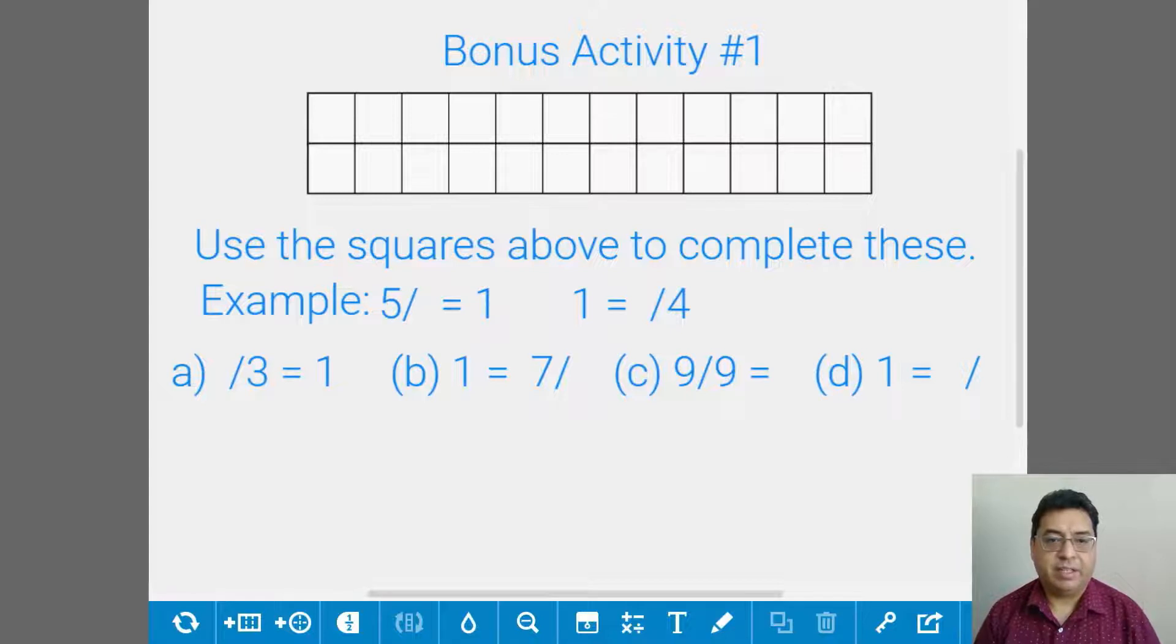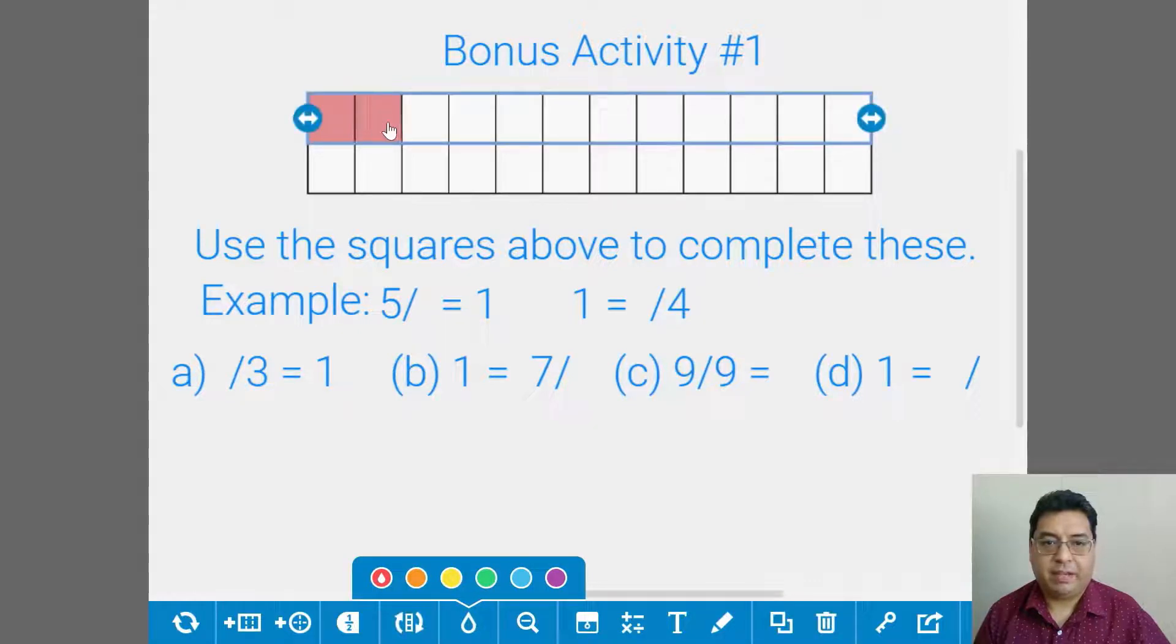So for the first one here, it says, use the squares above to complete these. For example, five over blank equals one, and one equals blank over four. So basically, you're going to shade in. What I do here is go down to the color feature, click on it, and just choose a color. We've got five here, two, three, four, five. And then what makes it one here to shade it in? Well, it's also going to be five. So I'm going to shade in five.